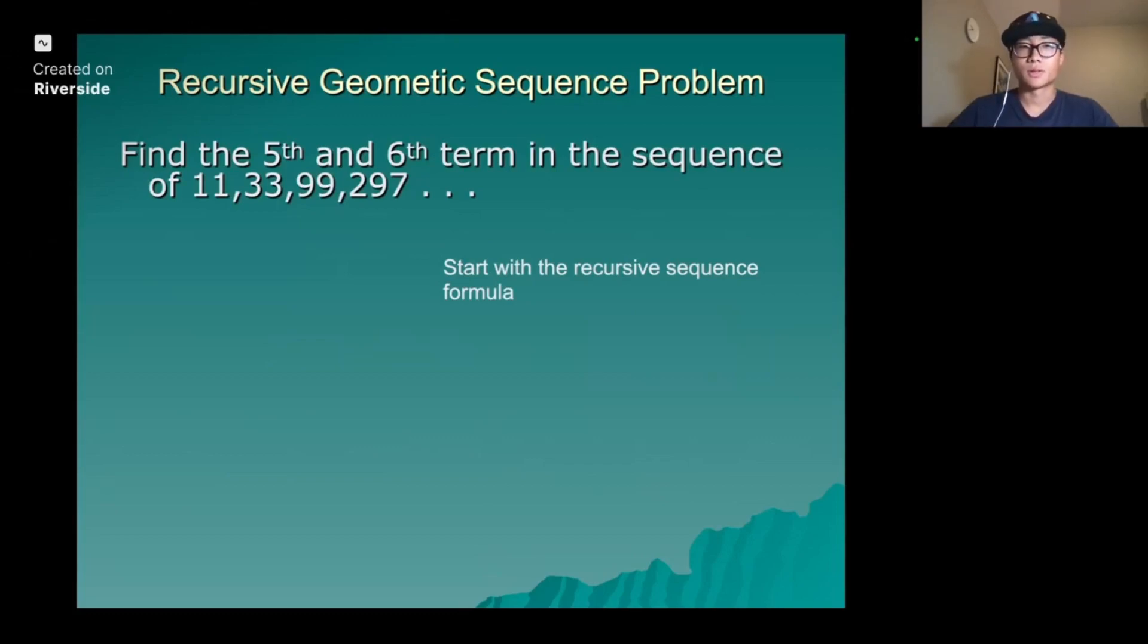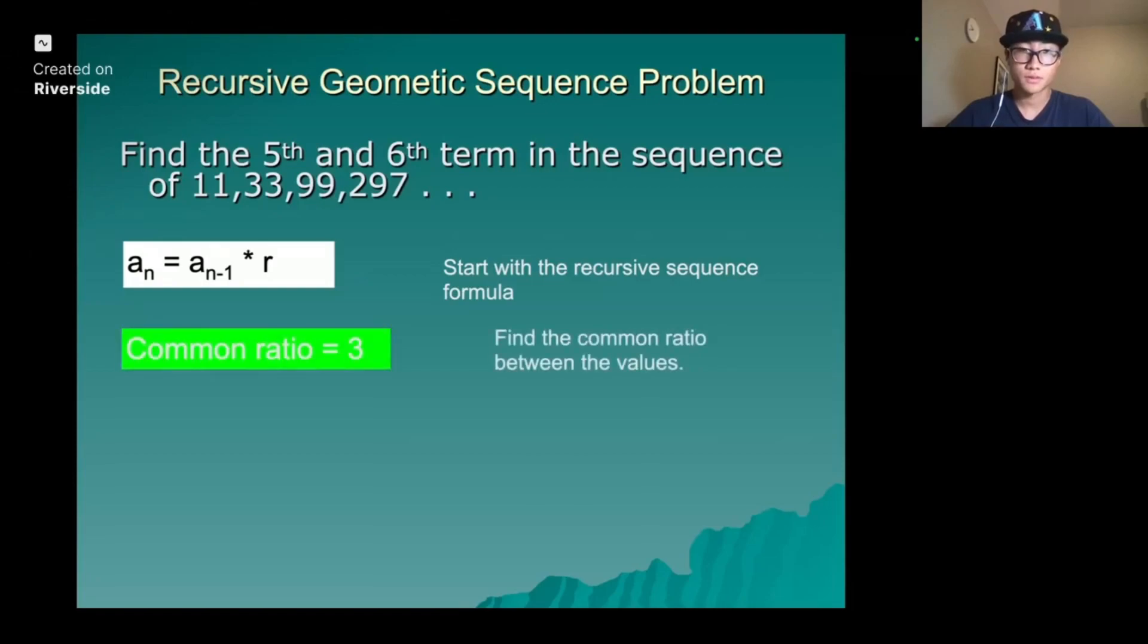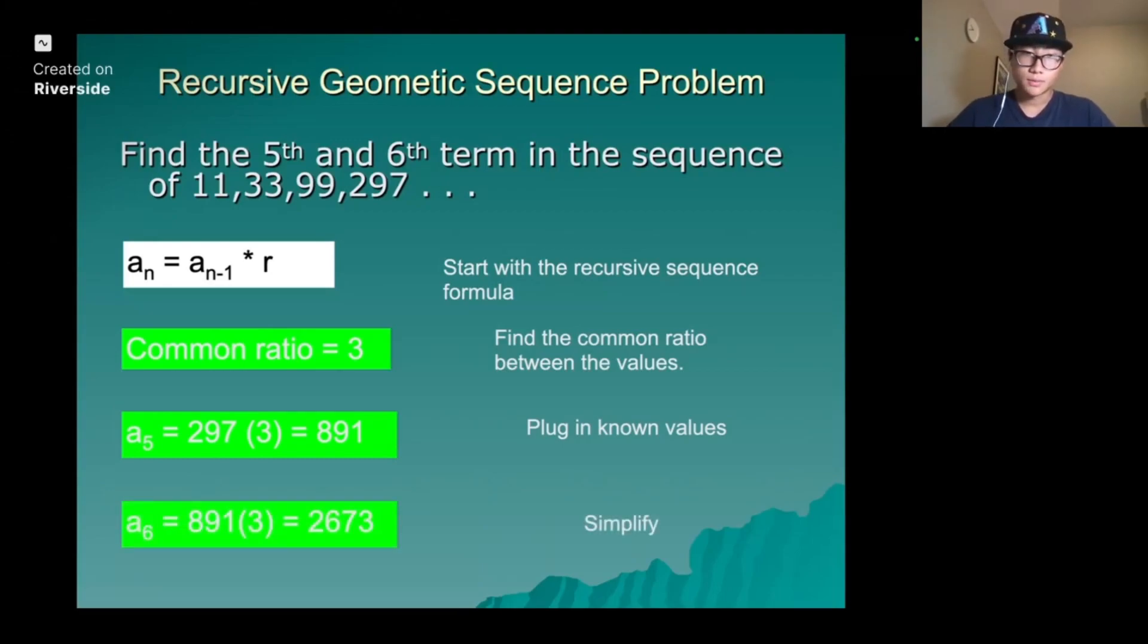Example: recursive geometric sequence problem. Find the 5th and 6th term in the sequence. Start with the recursive sequence formula. An equals an minus 1 times r. The common ratio is 3. Plug in known values and simplify. We get that. 5th term would be 891. 6th term would be 2673.